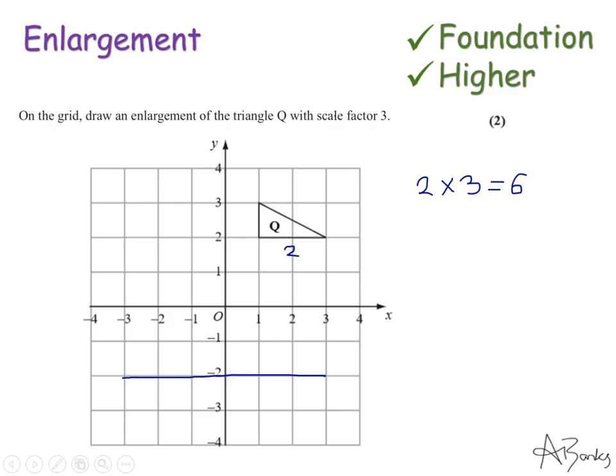The other side, the height of the triangle going up, is only 1 square up. So that is going to become 3 squares up. Starting from this point, going 3 upwards. That is there.